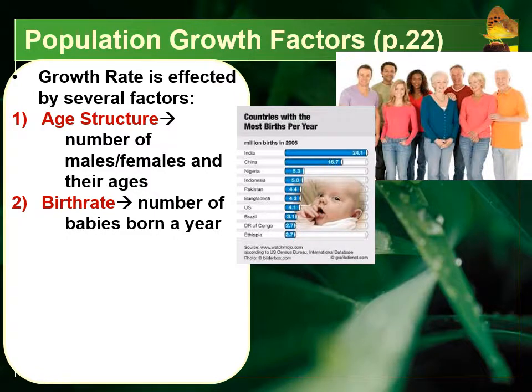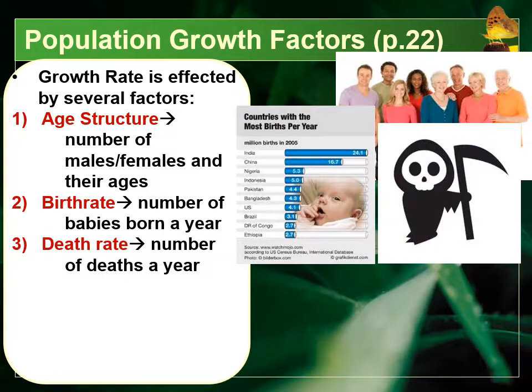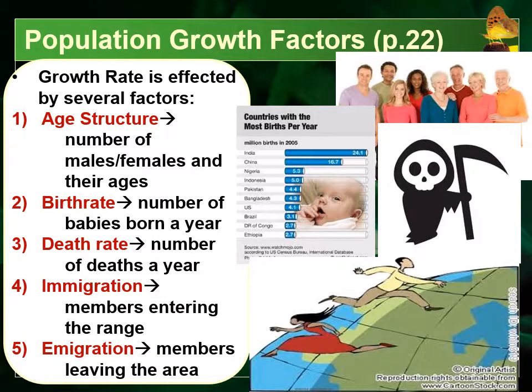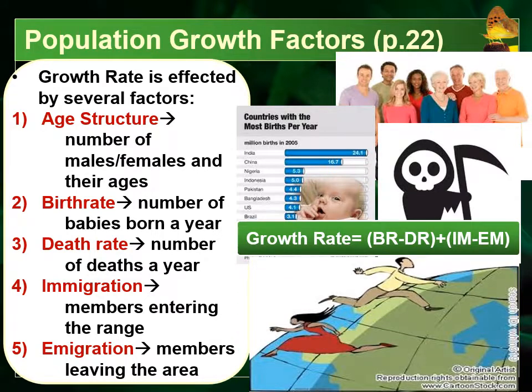Numerically, when we think about growth rate, we consider the birth rate — the number of newborns born every year — versus the death rate, which is how many individuals die within a year. Then there is immigration versus emigration: immigration is members from another population coming into the area, and emigration is members leaving for a different population or habitat. The growth rate equation is: birth rate minus death rate plus immigration rate minus emigration rate. Comparing these values tells us how to measure population change over time.